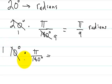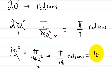So 10 goes into 180 eighteen times, so that's going to be equal to pi over 18 radians, and that's equal to 10 degrees.